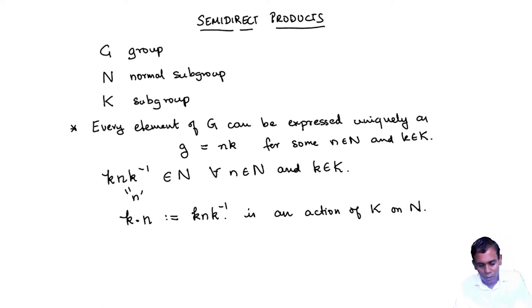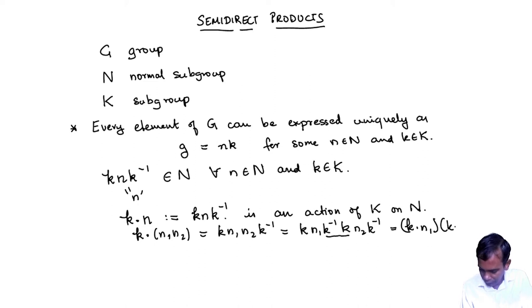Then this is an action of K on N. It's an action of K on the set N, but it's not just an action on the set. It is also an action such that k dot n1 n2, well what is that? That is k n1 n2 k inverse, but we can write that as k n1 k inverse k n2 k inverse. Just because this k inverse cancels off with this k. So this is k dot n1 times k dot n2.